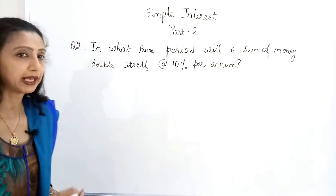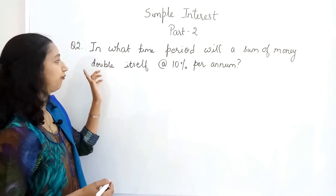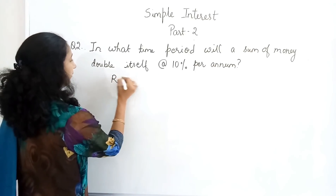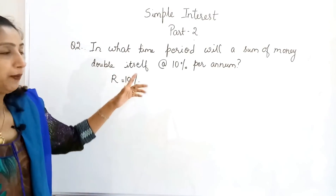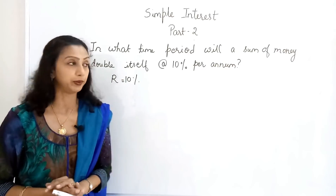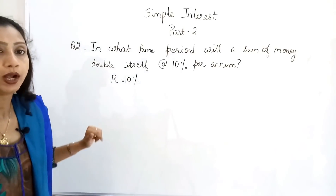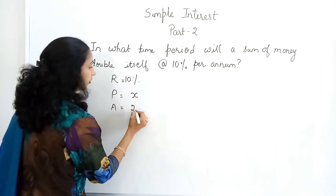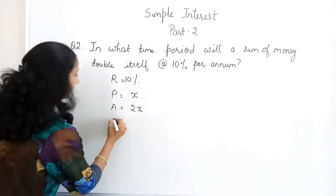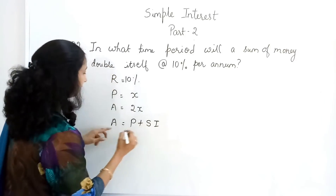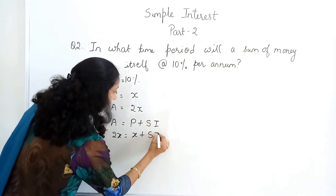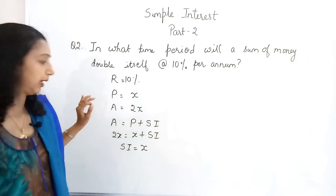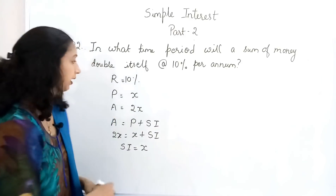Another example: in what time period will a sum of money double itself at the rate of 10% per annum? Only the rate — 10% — seems to be given. Suppose you deposit ₹100 and get back ₹200; that means if the principal is x, the amount is 2x. From Amount = P + SI: 2x = x + SI, so SI = x. Whenever the amount doubles, simple interest equals the principal.